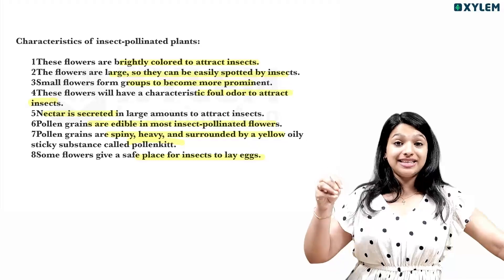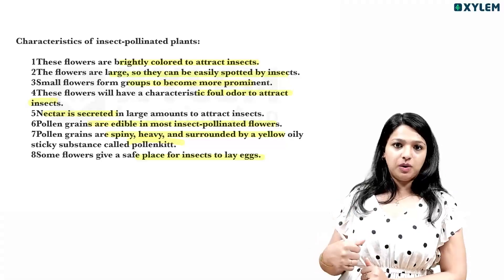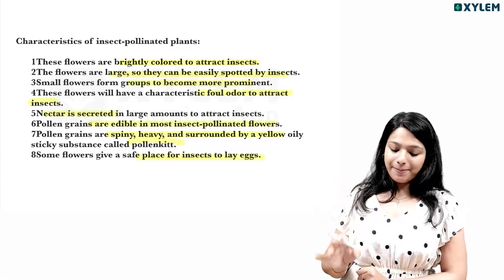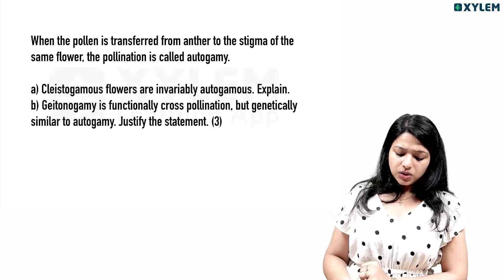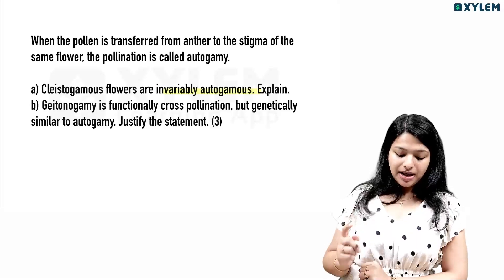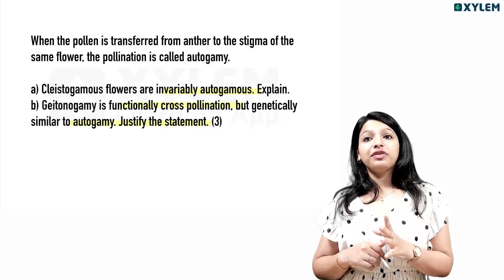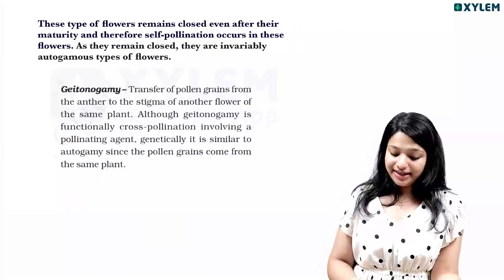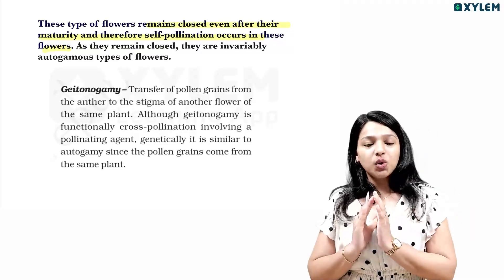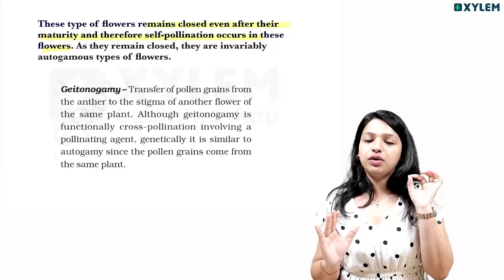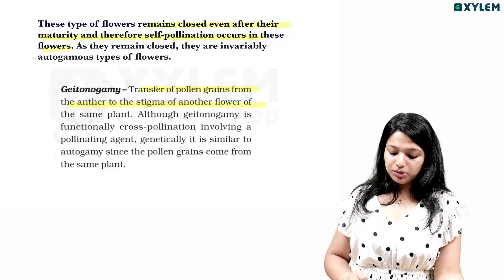Some flowers are a safe place for insects to land. When pollen is transferred from the anther to the stigma of the same flower, the pollination is called autogamy. Cleistogamous flowers are invariably autogamous.